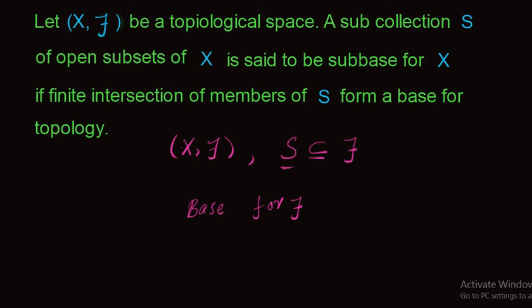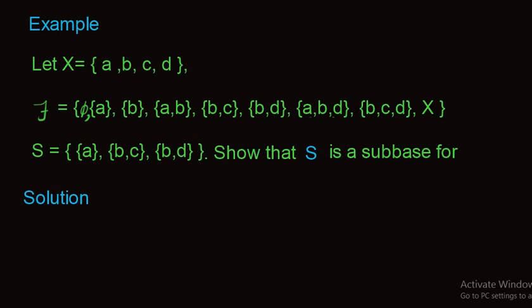In order to understand this definition we discuss an example. We have a ground set X consisting of {a, b, c, d} and tau is a topology on X whose elements are: phi, singleton set {a}, {b}, {a,b}, {b,c}, {b,d}, {a,b,d}, {b,c,d}, and X. S is a subset of tau consisting of singleton sets {a}, {b,c}, and {b,d}. We want to show that S is a sub-base for tau.